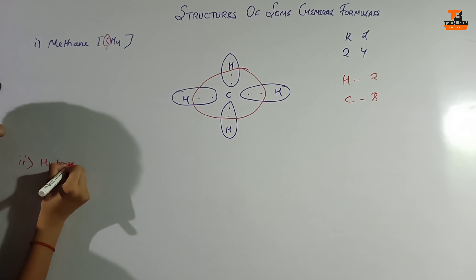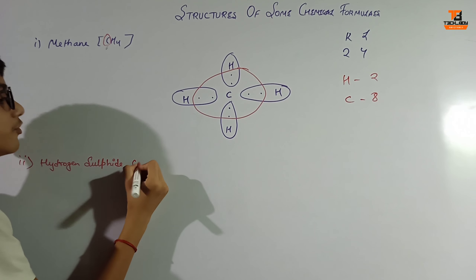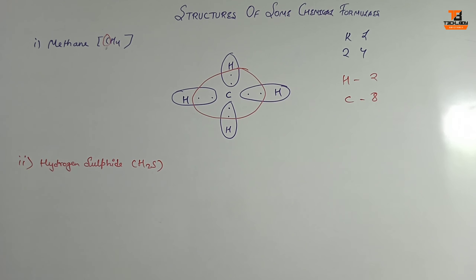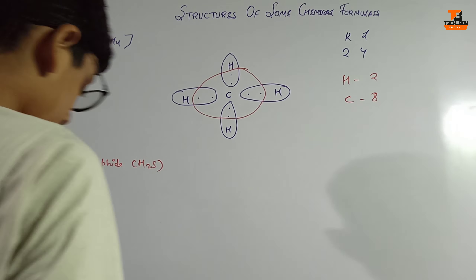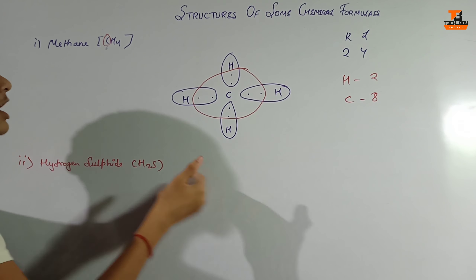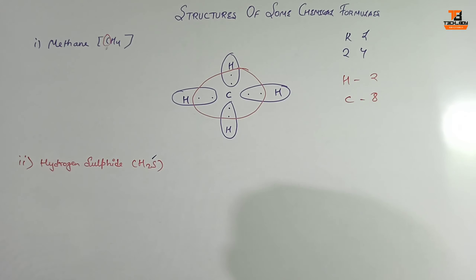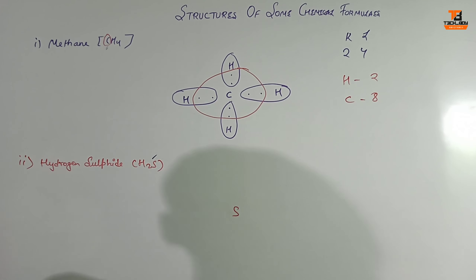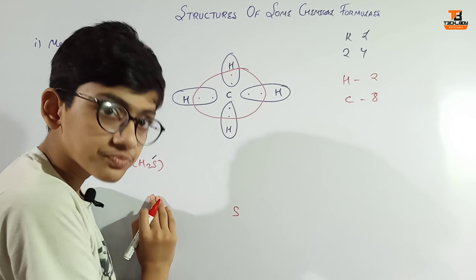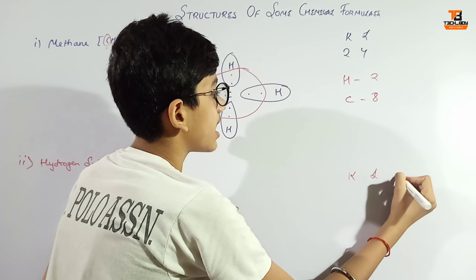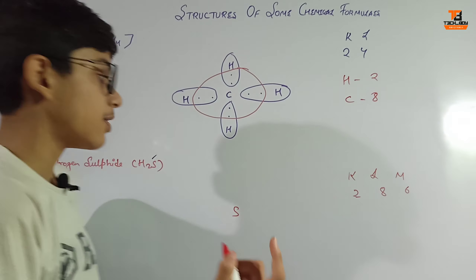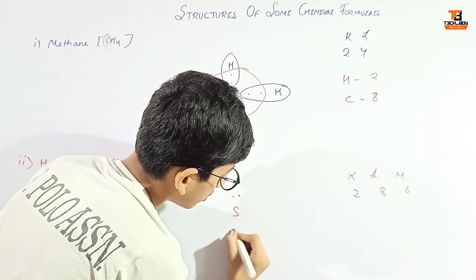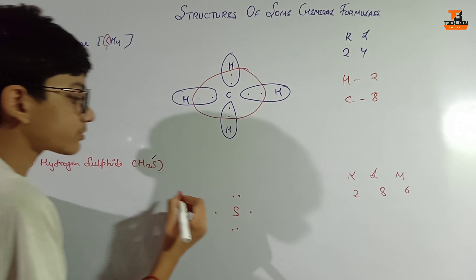The second one of today is hydrogen sulfide, whose chemical formula is H2S. We know that in H2S, sulfur will be our central atom. Sulfur's atomic number is 16, so its electron configuration is 2, 8, and 6 - meaning sulfur has 6 valence electrons, which we indicate as 2 and 6 around sulfur.